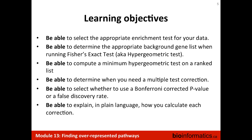You should understand how a ranked list is interpreted with a minimum hypergeometric test, and be able to determine when you need to apply a multiple testing correction. In genomics you mostly will need to do that. There are a couple of different multiple testing corrections — you should understand what the Bonferroni correction does and what a false discovery rate does.